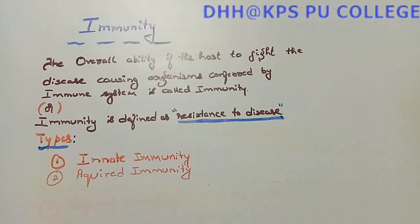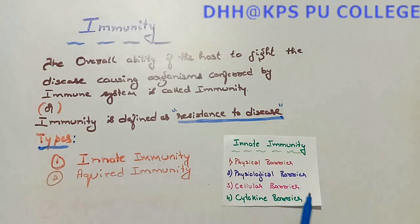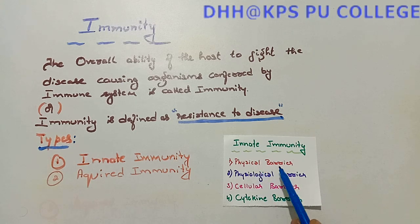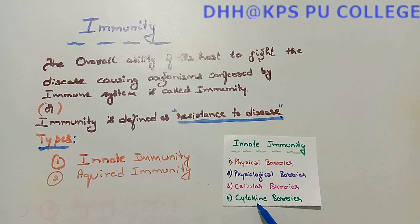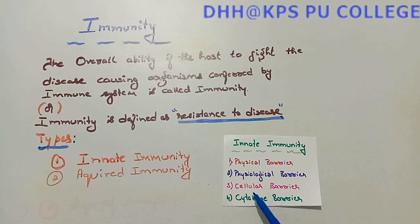Innate immunity is of four types of barriers. The four types of barriers are: physical barrier, physiological barrier, cellular barrier, and cytokine barrier.